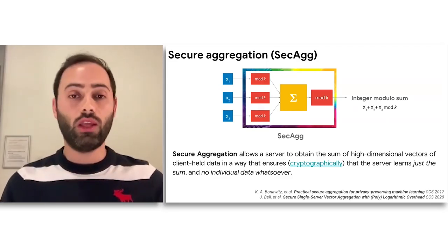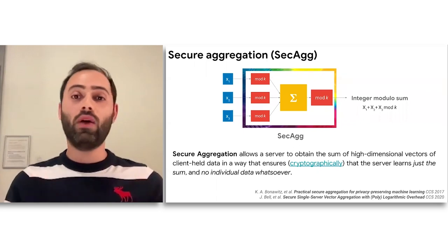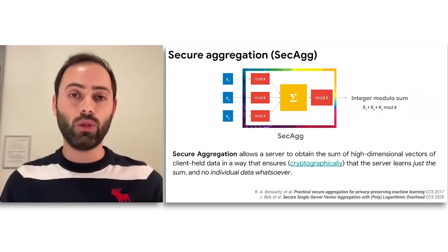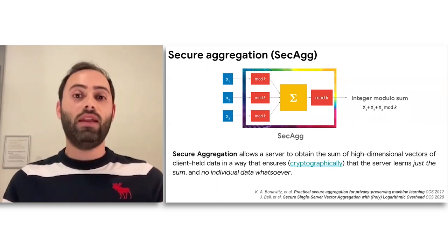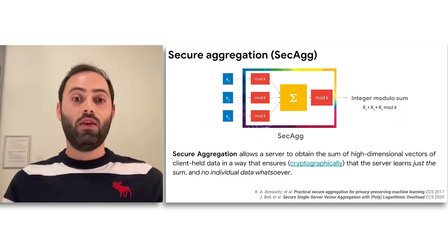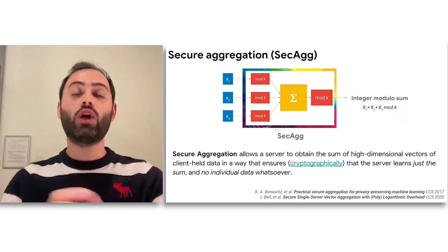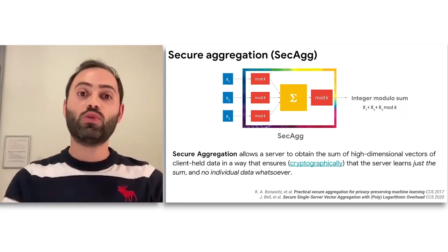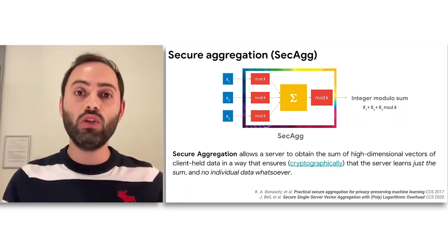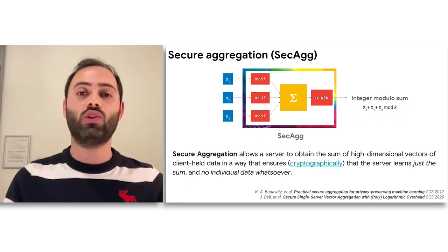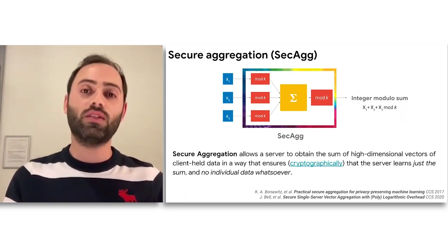It does so in a way that ensures — and this is cryptographic — that the server only learns the sum and no other information whatsoever about the individual vector being sent back from the client. We can assume this interesting magic box that we can use in order to reduce the information that the server can see, and only allow the server to see aggregated information across a large cohort of clients in every training round of the model in a federated learning system.